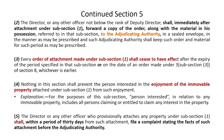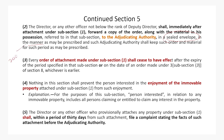Subsection 2: the Director or officer not below Deputy Director shall immediately after the attachment order under subsection 1 forward a copy of the order along with material in his possession to the Adjudicating Authority in a sealed envelope and in the manner as may be prescribed, and the Adjudicating Authority shall keep such order and material for such period as may be prescribed. Confidentiality must be maintained. The manner is provided under the 2005 rules appended to the PMLA.